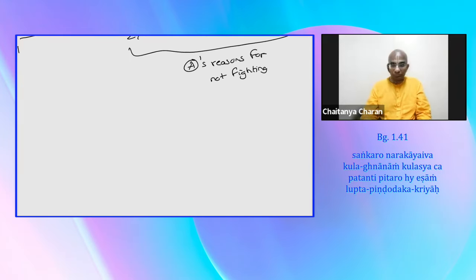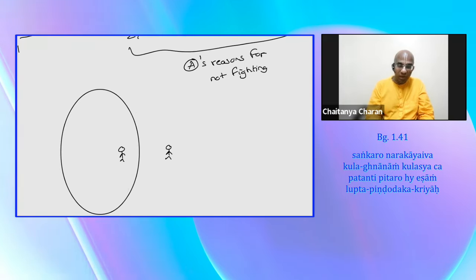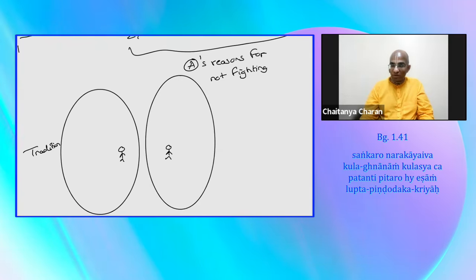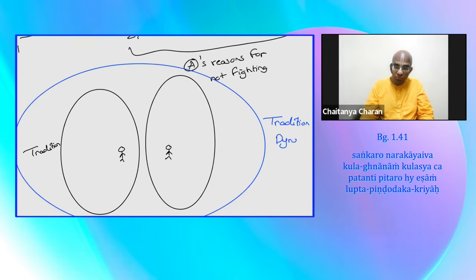Arjuna basically, at least in this part, is saying that we are not just two individuals fighting against each other. We are a part of a large community that is a part of a tradition. They are two communities, but both are part of one larger tradition, the same Kuru dynasty. They are one dynasty, which has its own traditions.